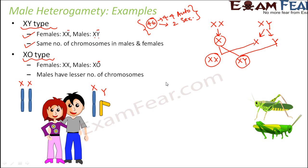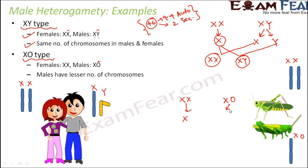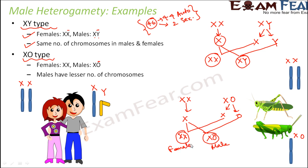Similarly, in case of X-O type, for example in grasshoppers, females are XX and males are XO. The female can give only X gametes. The male can either give X or give nothing. If X combines with X, XX is formed — a female. If X combines with the blank, XO is formed — a male. This is how sex determination happens in different organisms. It is not only male heterogamity; female heterogamity is also seen in some organisms.